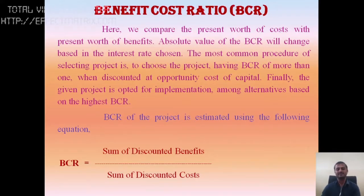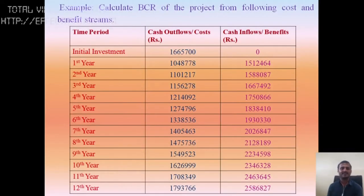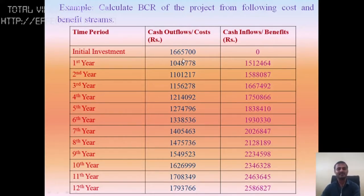BCR of a project is estimated using the following equation: BCR is equal to the sum of the discounted benefits divided by the sum of the discounted costs. Cash flows are made by the initial investment across years — first year, second year, third year, fourth year, and so on.